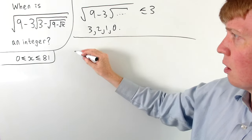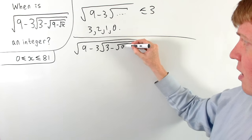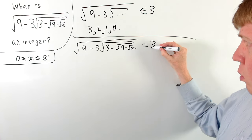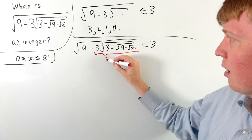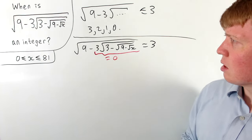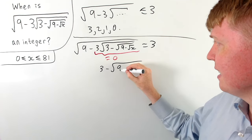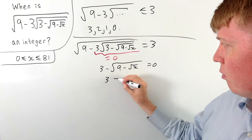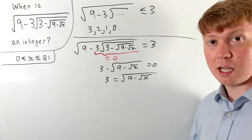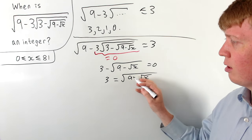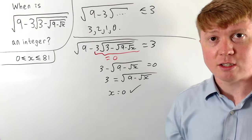Let's try setting this equal to three. We need the square root of nine minus three times the square root of three minus root nine minus root x to equal three. We need this to equal the square root of nine, so the entire expression subtracted from nine must be zero — meaning three minus root nine minus root x equals zero. Rearranging gives three equals nine minus root x, which is satisfied exactly when x equals zero. So we do get a solution at x equals zero, where our original expression is the integer three.